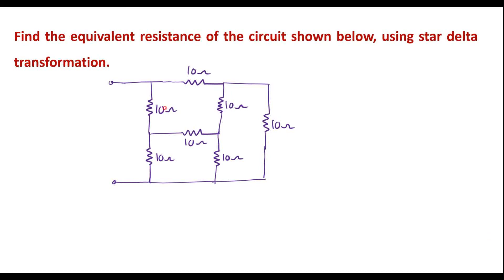In this video, let me consider one numerical on star-delta transformation. Find the equivalent resistance of the circuit shown below using star-delta transformation. This is the given circuit — we are supposed to find the equivalent resistance between terminals A and B using star-delta transformation.